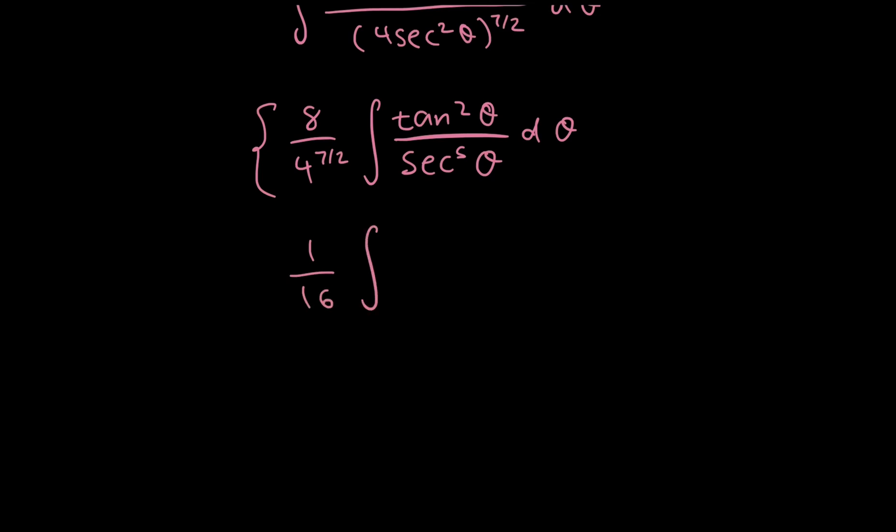And then my integral, when I write it in terms of sines and cosines, I know that tan is equal to sine over cosine, and secant is just 1 over cosine, so that I end up with sine squared theta over cosine squared theta times cosine to the power of 5 theta d theta.